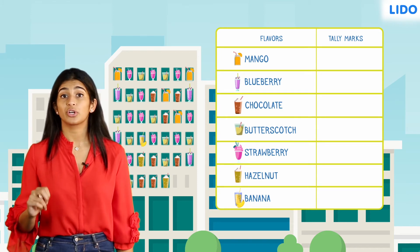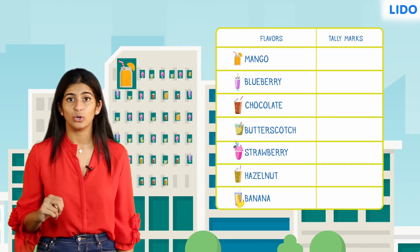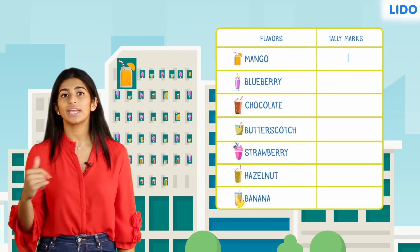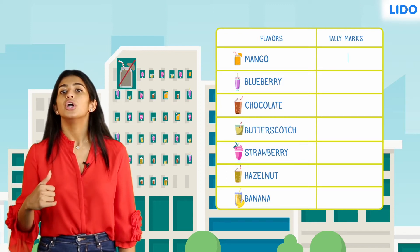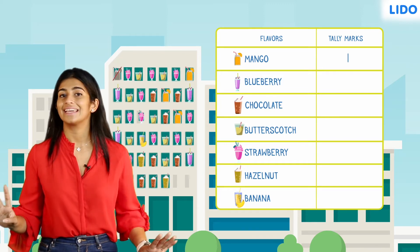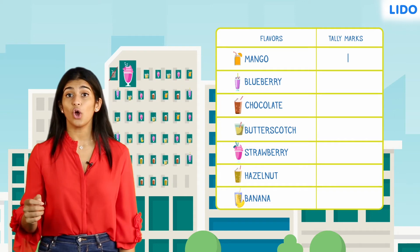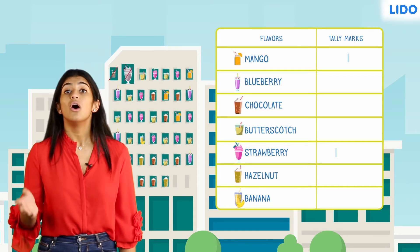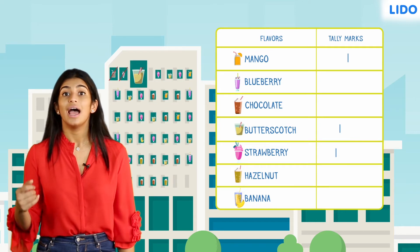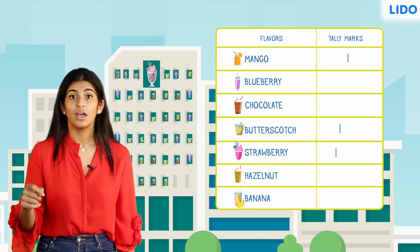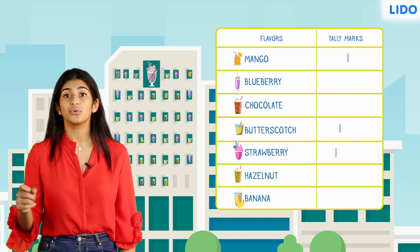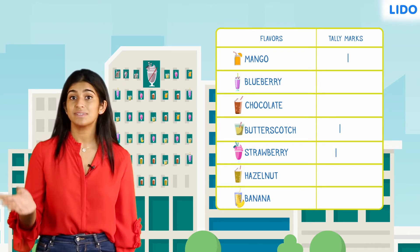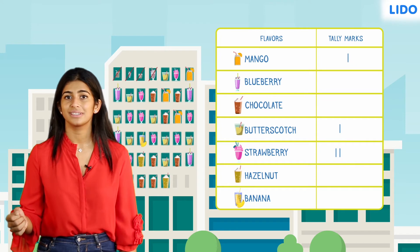The first response that has been recorded is mango. So, let's place a mark as a count for mango and strike it from my book to be sure that I don't miss anything. Next is strawberry, so we place a line next to the strawberry flavour. We do the same for butterscotch. Now, we have strawberry again. What should we do when the flavour appears again? We will continue to add the same standing line to represent the count.